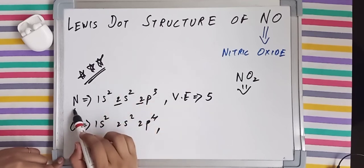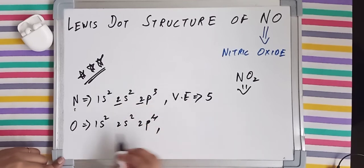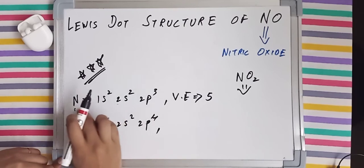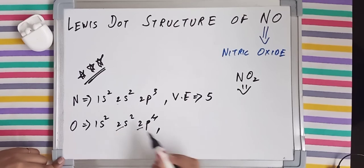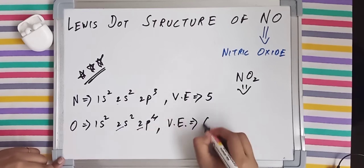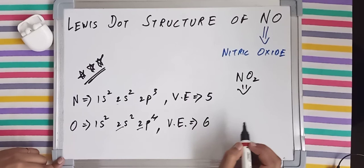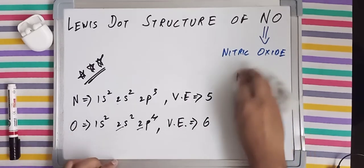So 2 plus 3, they have five valence electrons. Whereas for oxygen, it too is a second period element, and the 2s has two electrons whereas 2p has four electrons. Cumulatively they have six valence electrons. Now let's proceed with the structure.